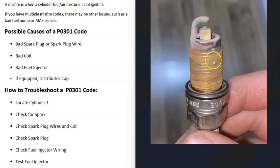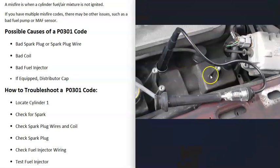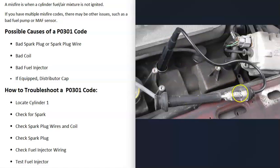You can also check whether that cylinder is getting spark using an inline spark tester tool. One side connects to the spark plug and the other to the coil. You start the vehicle and there should be a visible spark inside the tester. If there's no spark, you know you're not getting spark to that cylinder. These tools are low cost — usually less than ten dollars.